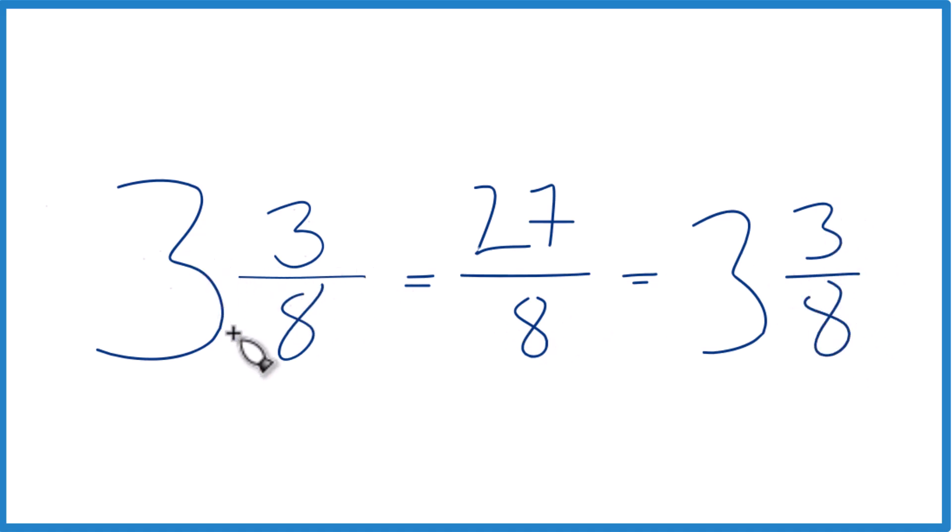That's it. This is Dr. B, writing the mixed number, 3 and 3 eighths, as an improper fraction. The answer is 27 eighths. Thanks for watching.